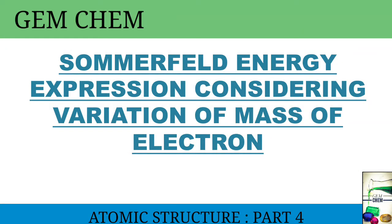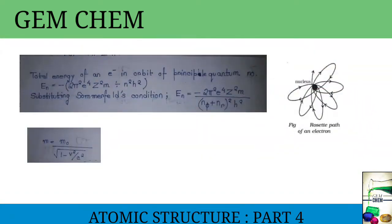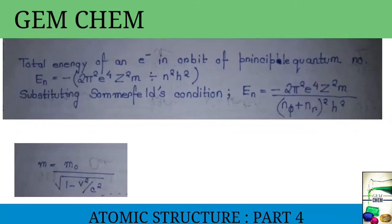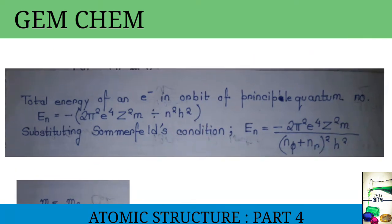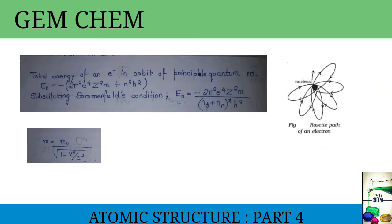Now we will get the expression of Sommerfeld energy considering the variation of mass of the electron. We have already seen that the total energy of an electron in the orbit of principal quantum number is given by Bohr's expression. When we substituted the Sommerfeld condition — putting the value of N as N-phi plus N-r — this expression implies that electron energy would be the same in any orbit of the principal quantum number N, whatever the ellipticity. However, Sommerfeld considered the variation of mass of the electron during its motion in an elliptical orbit and showed that energy of the electron would actually be different for different values of N-phi.